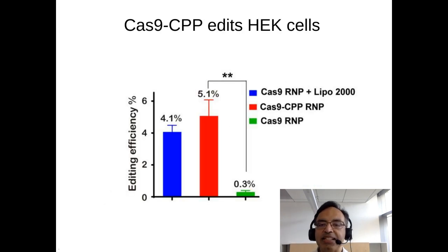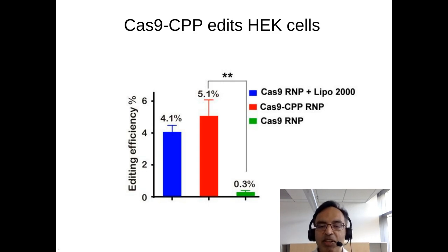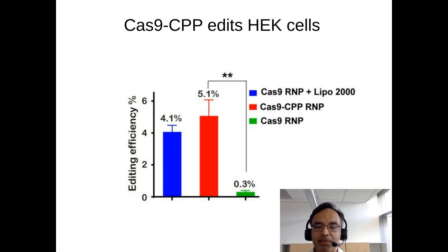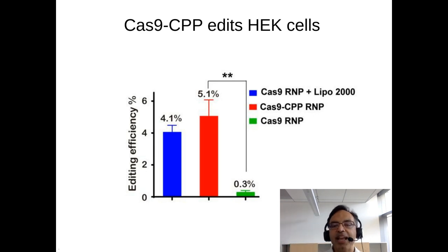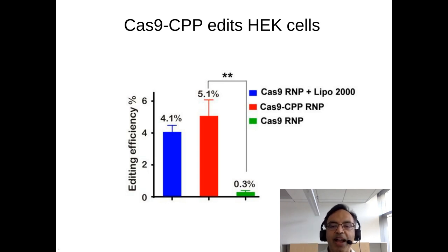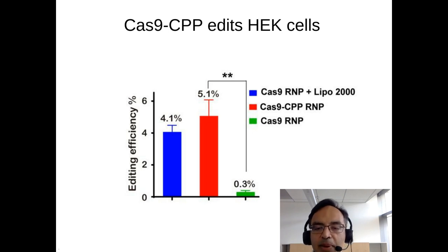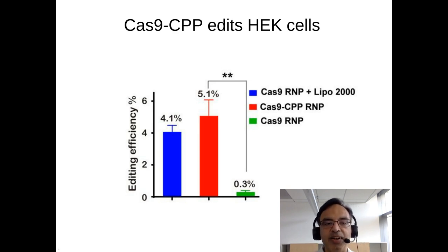We investigated if Cas9 CPP could edit cells. We took Cas9 CPP with a guide RNA targeting the GFP gene, incubated it with HEK cells expressing GFP, and after 48 hours isolated the cells for Sanger sequencing. Just adding Cas9 RNP to cells yields only about 0.3% editing — near background levels. That increases to 5.1% if you conjugate arginine-9 as a CPP to Cas9 via the DEC linker — more than a 10-fold, almost 20-fold increase in editing. At least in this experiment, this is comparable to lipofection effectiveness.